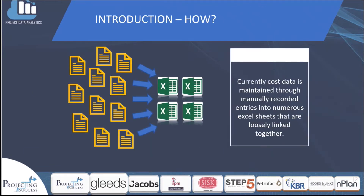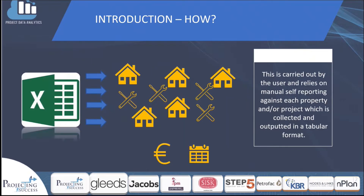How is this currently done? Currently, cost data is maintained through manually recorded entries into numerous Excel sheets that are loosely linked together. This is carried out by the user and relies on manual self-reporting against each property and/or project, which is collected and outputted in a tabular format.